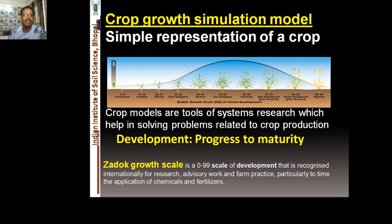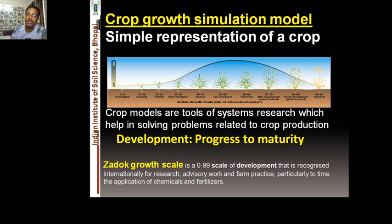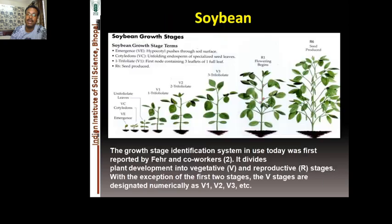The Zadoks scale is particularly used to time the application of chemicals and fertilizers, and crop models are tools of system research that help solve problems related to crop production. As an example of legumes, the soybean growth stages are shown here.